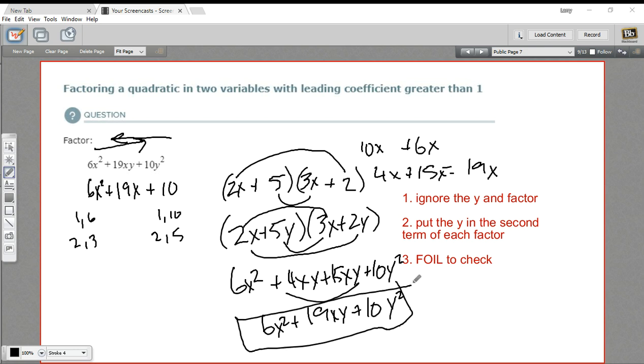And that checks out. So that's how to factor a quadratic in two variables when you've got the leading coefficient greater than 1.